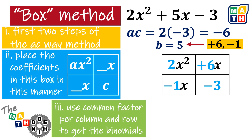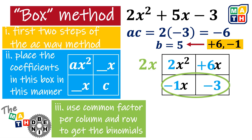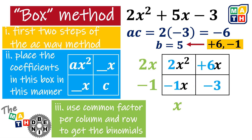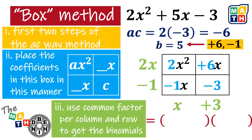Step III is to look for common factors per column and row. Starting with the first row, the common monomial factor is 2x. For the next row, the common monomial factor is negative 1. Now we're done with the rows. As for the columns, the common factor is x. And for the final pair, the common monomial factor is positive 3.